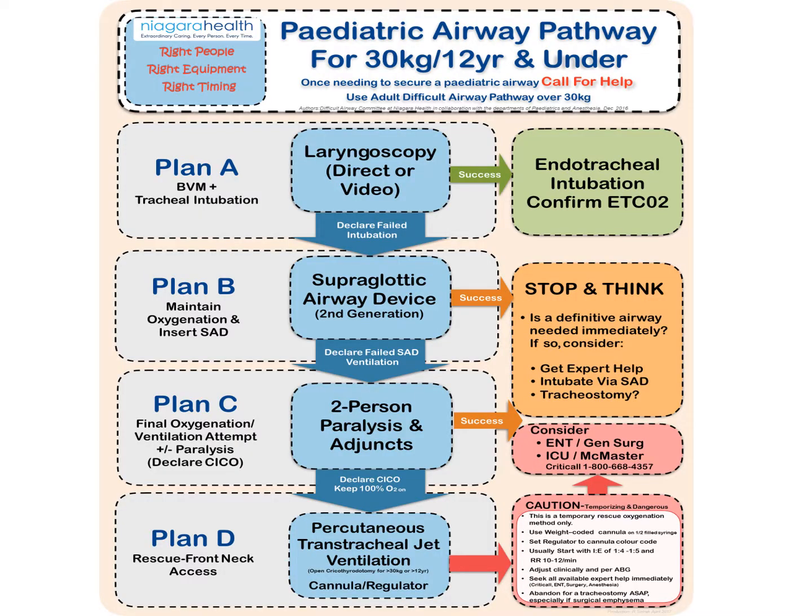This is our algorithm for the pediatric patient. It covers all the same key elements as our adult population, including Plan A, Plan B, Plan C, and Plan D. We follow the same elements: direct or video laryngoscopy, confirmation of endotracheal intubation. If we fail that, we declare failed intubation and move on to Plan B, where our primary focus is oxygenating the patient.